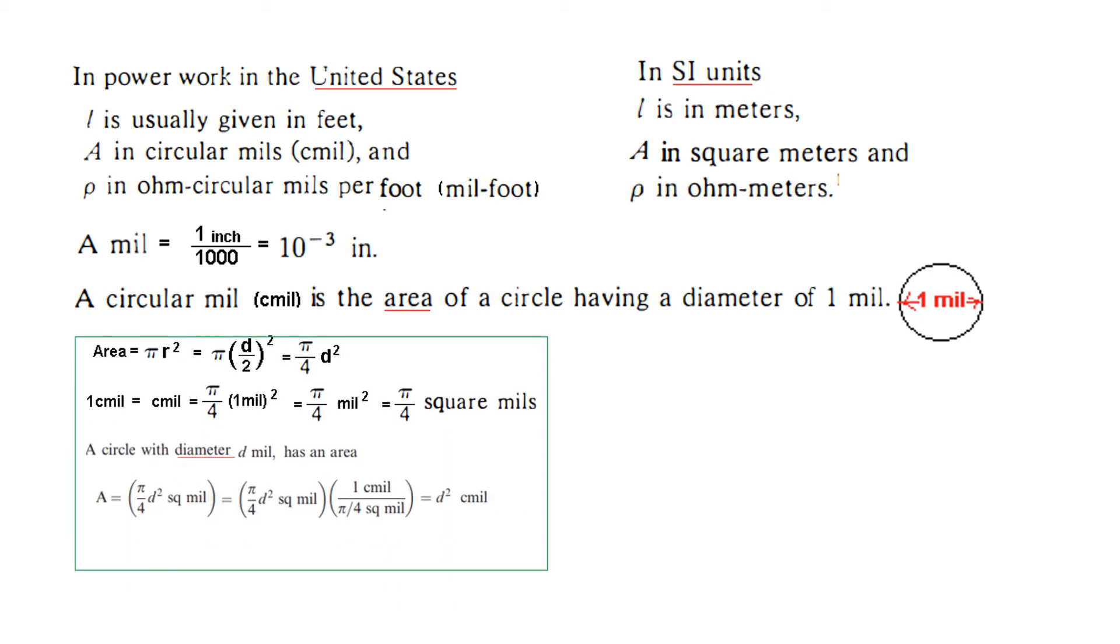I have explained here how the formulas have been derived. Area is πr^2, then r is d/2, so π/4 d^2. One circular mil equals π/4 mil^2. If the circle has a diameter of d mil, then the area in cmil is d^2 cmil. The crux is that we just keep in mind: if the diameter is d mil, then the area will be d^2 cmil. This is the only thing we have to remember.